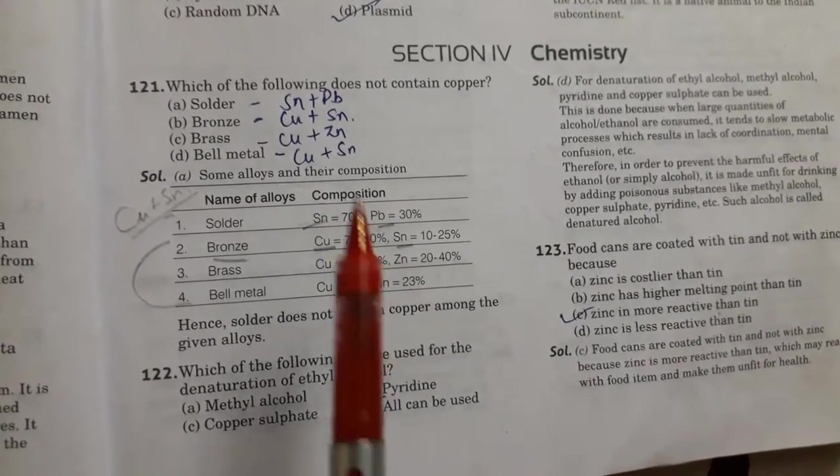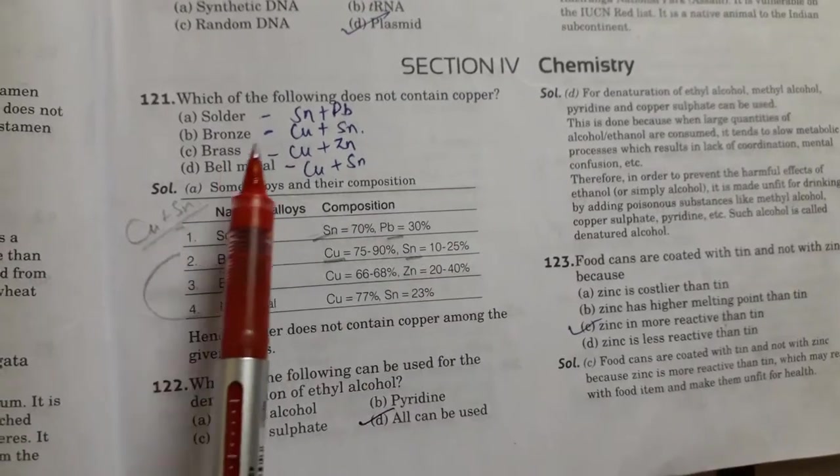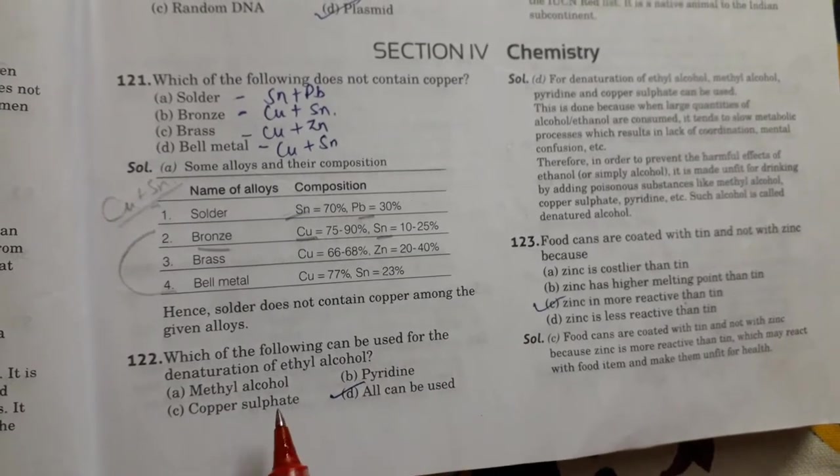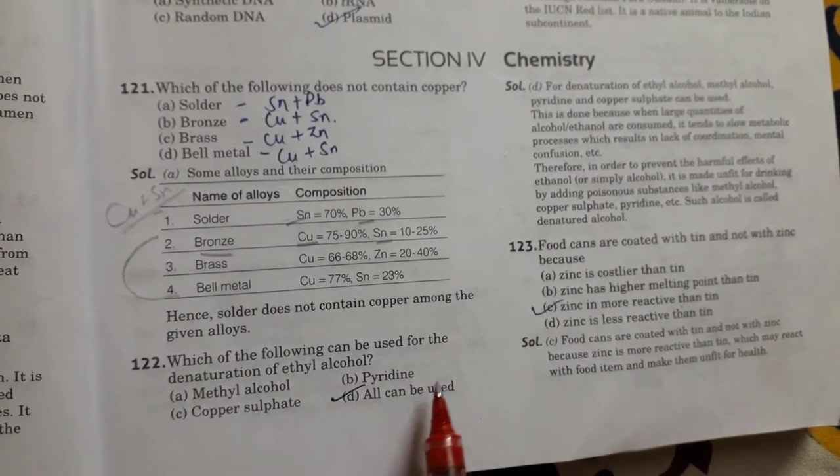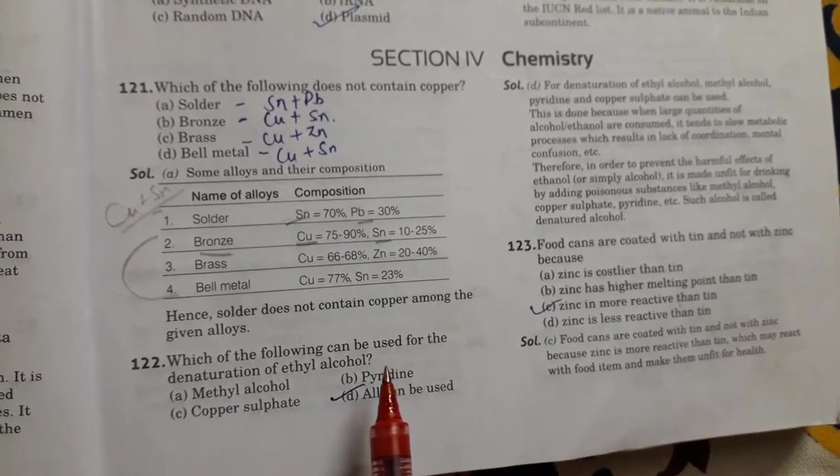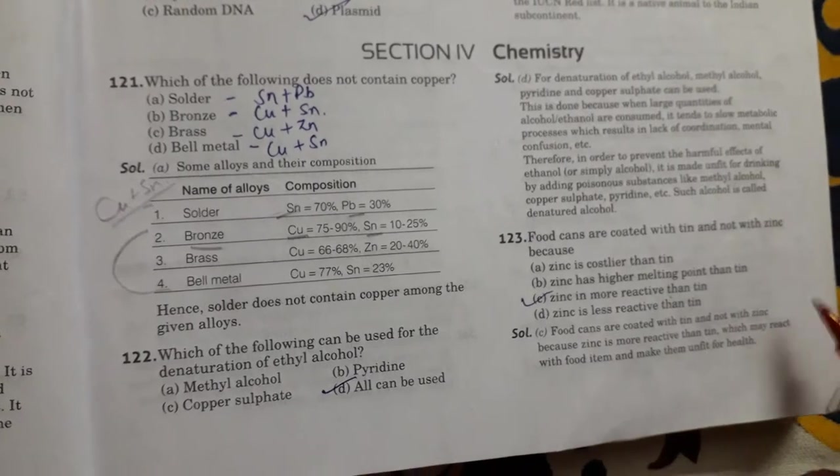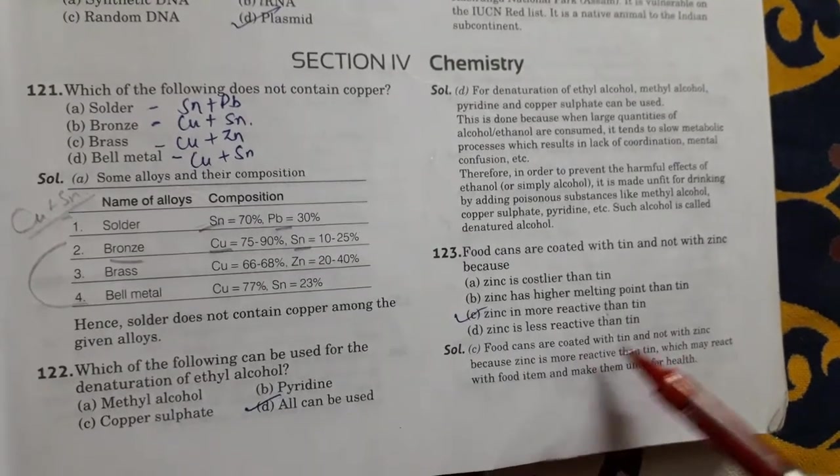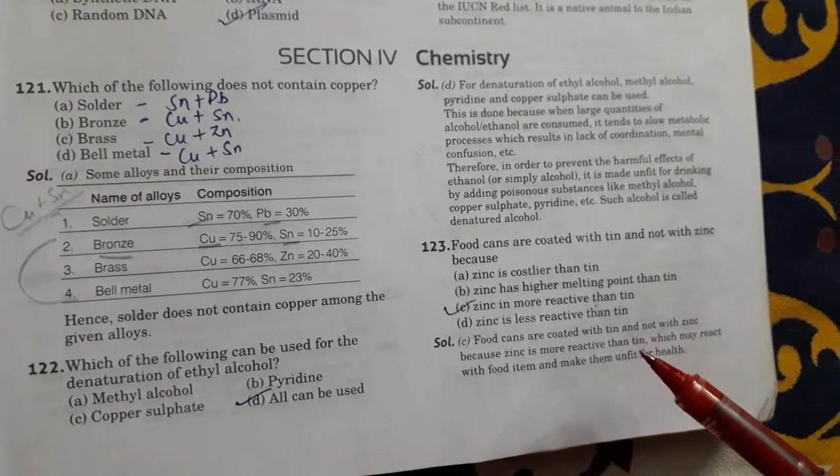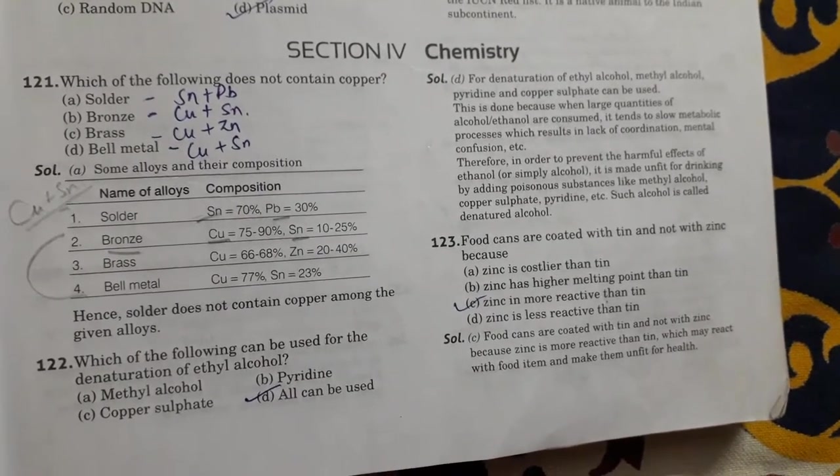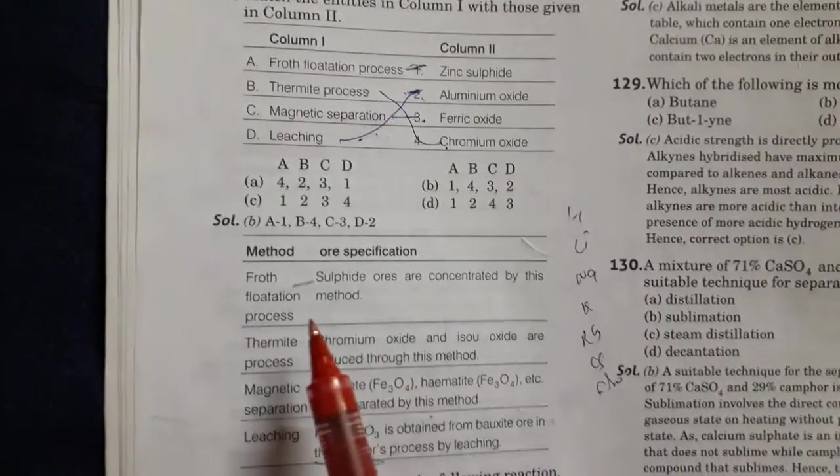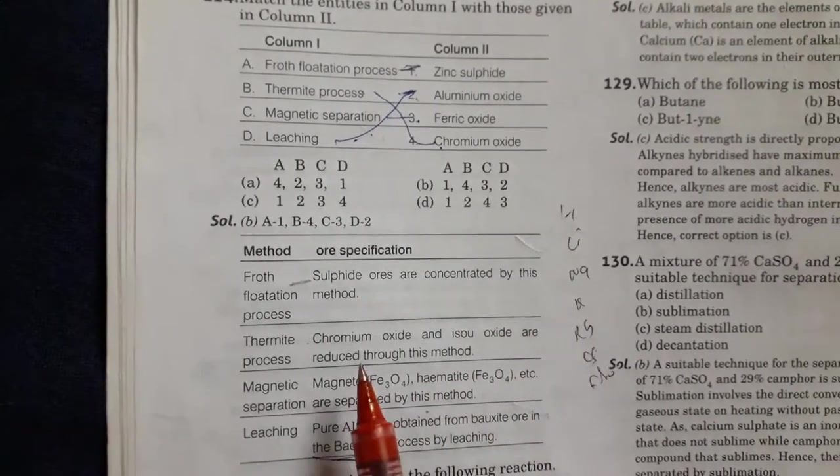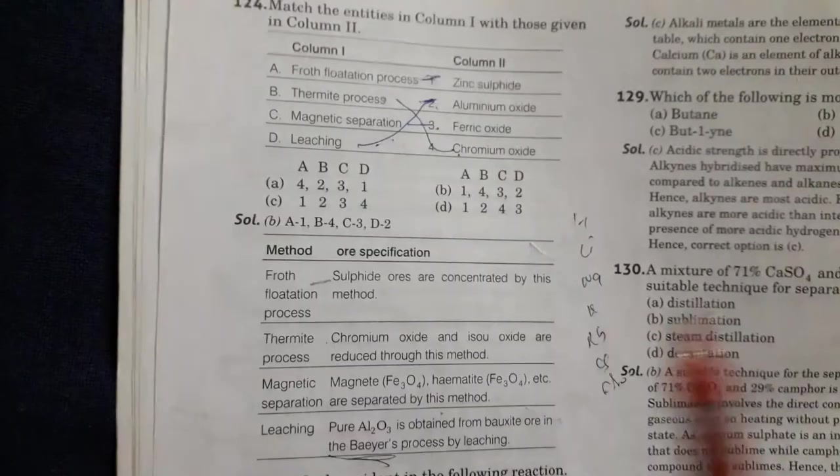Then now the chemistry section. Which of the following does not contain copper? So the solder option A does not contain copper. Next is which of the following can be used for the denaturation of ethyl alcohol? So all can be used: methyl alcohol, pyridine, copper sulfate. Next is food cans are coated with tin and not with zinc because zinc is more reactive than tin. Next is match the fruit flotation process is concentrated by this method. Sulphide ores are concentrated by float flotation.